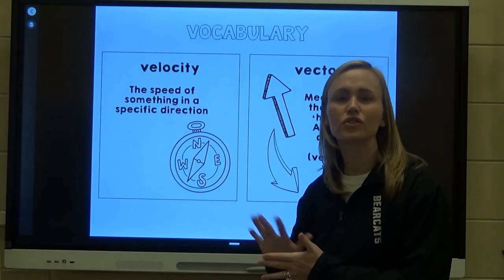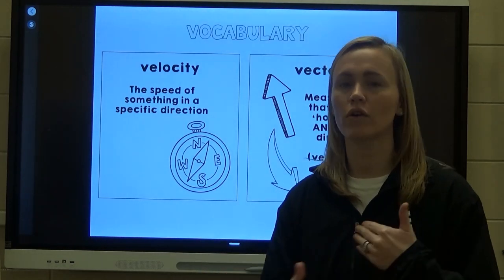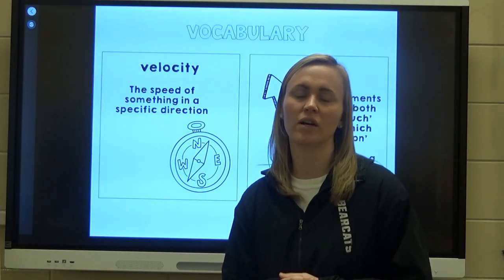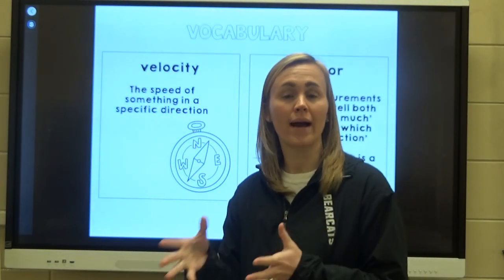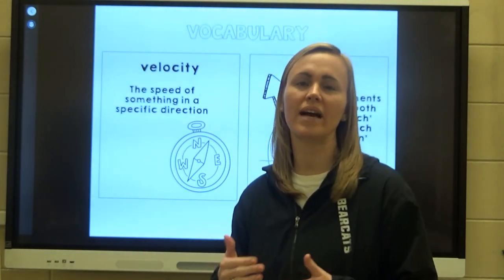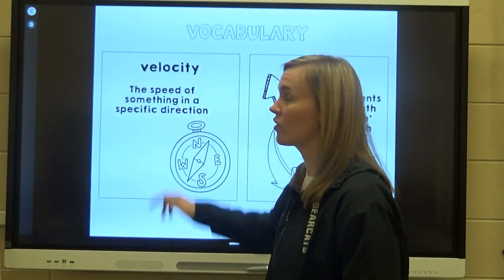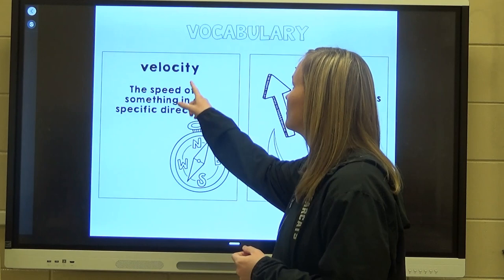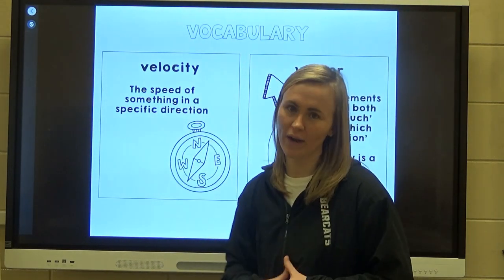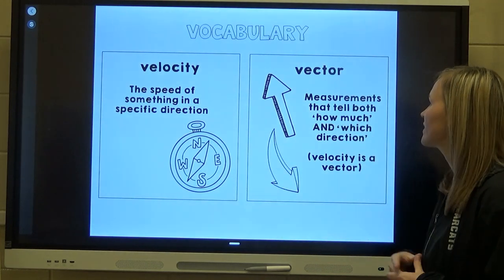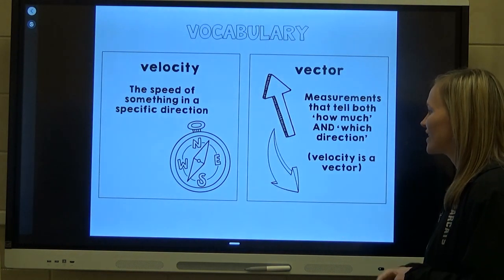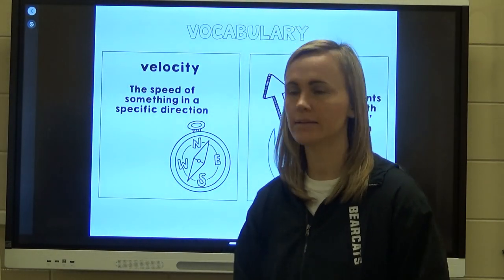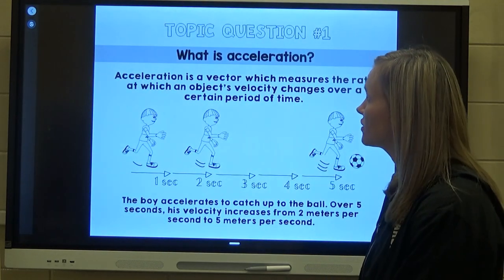We have two key vocabulary words. First, velocity, which we just covered — velocity is displacement over amount of time, and we include the direction. If you have a speed but no direction, you just have speed. In order to have velocity, you need speed in a given direction. Velocity is a vector, meaning it has both an amount and a direction.